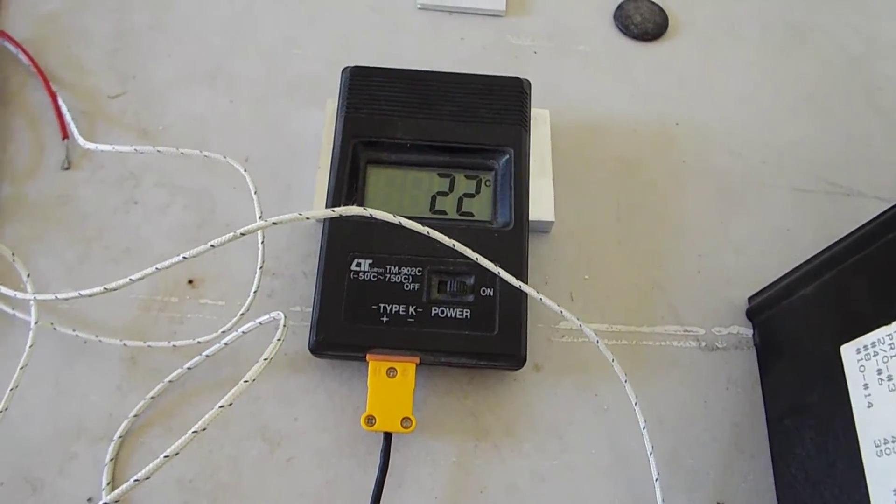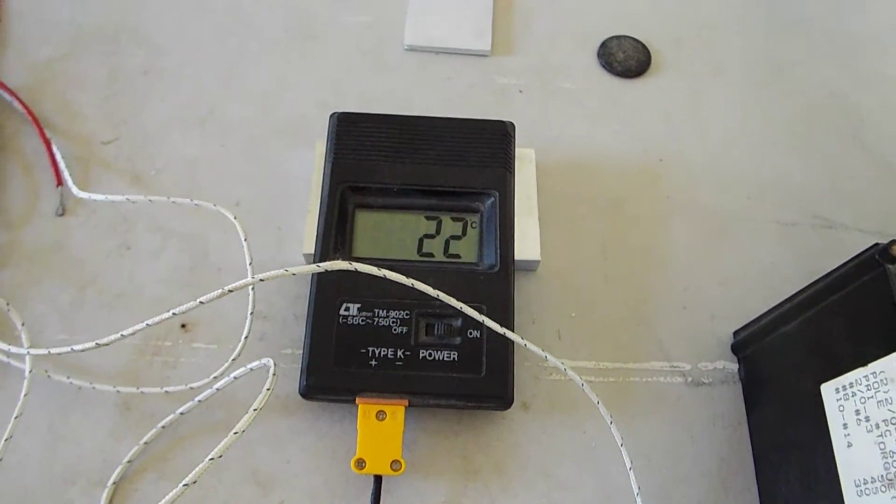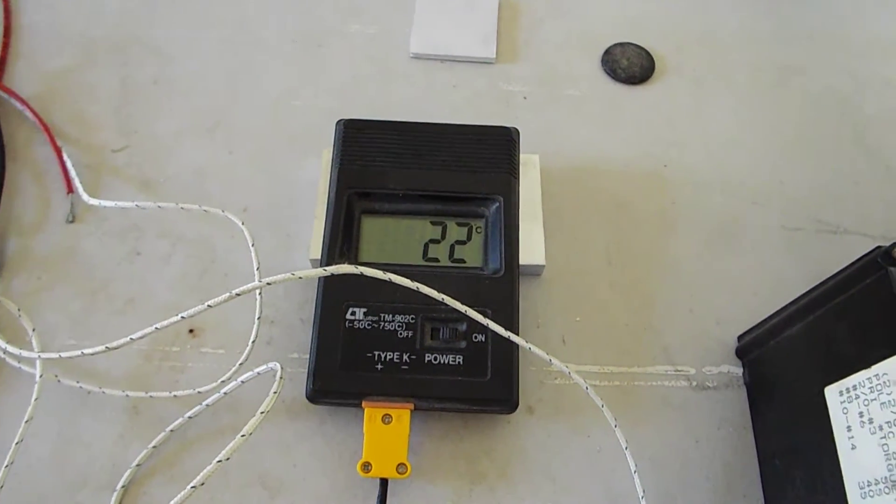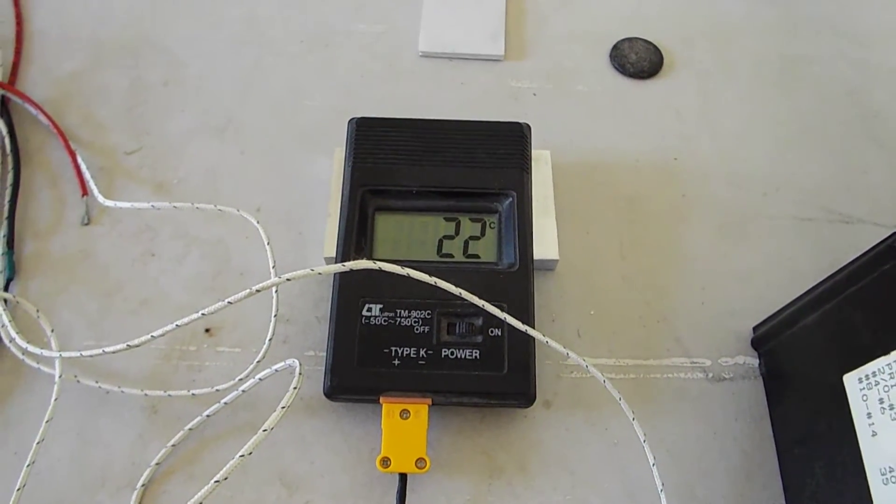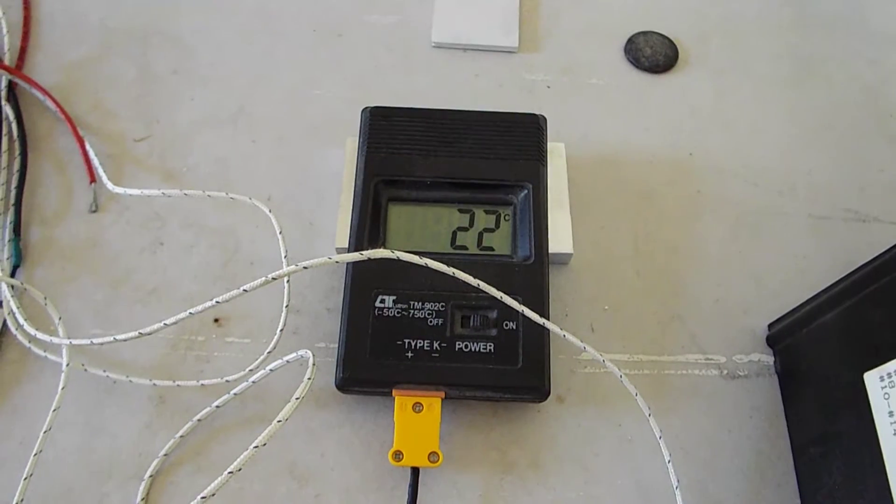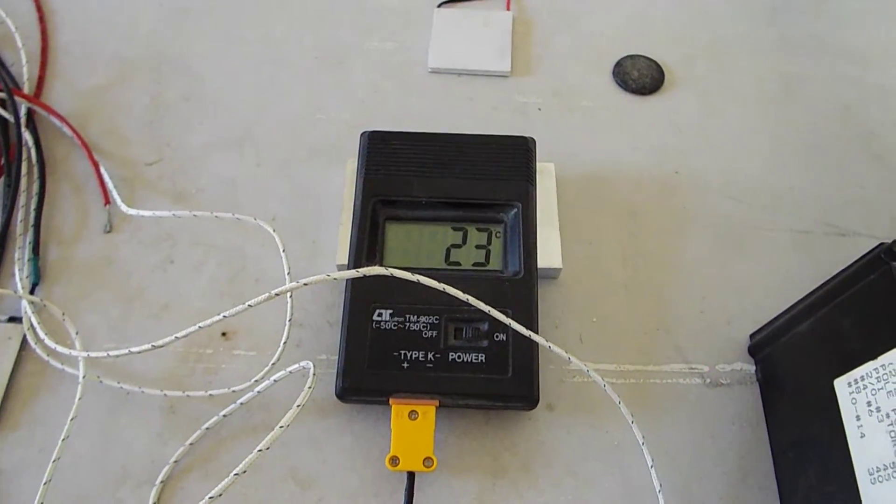It takes about a minute for the thing to settle out, but since there's not a whole lot of differential between the room temperature and the water block, it probably won't change very much. It looks like we're doing about 22 to 23 degrees C on the water block.